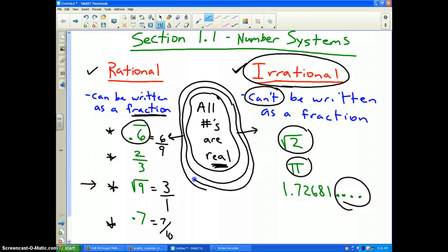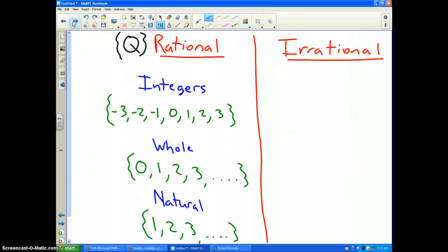So, one more time. Real numbers are either rational or irrational, depending on whether or not they can be written in fraction form. Now, the next type of number systems. Let's talk about irrational. If a number is irrational, you are done. There are no other number systems within the irrational column.